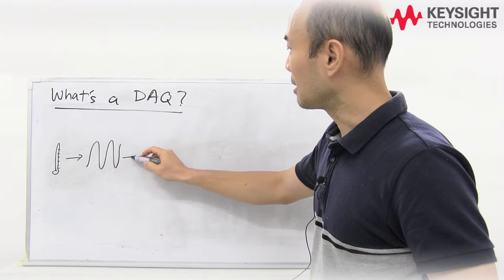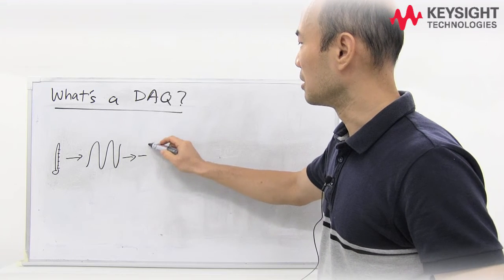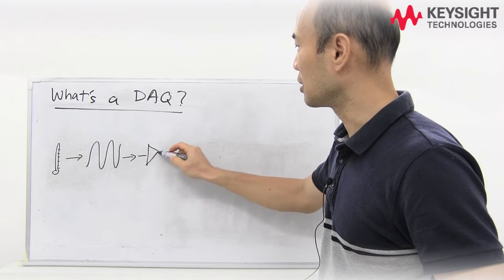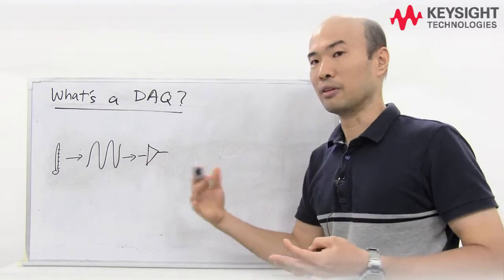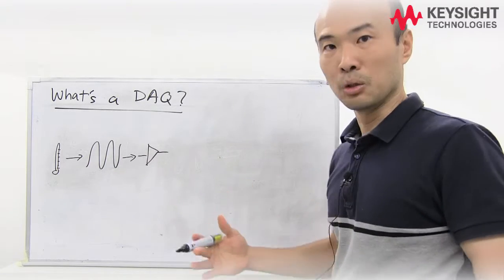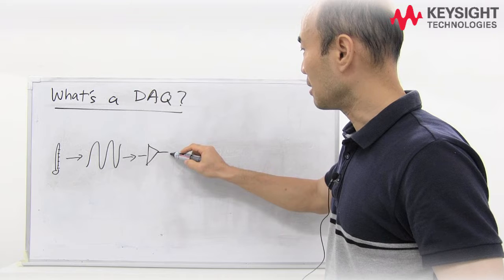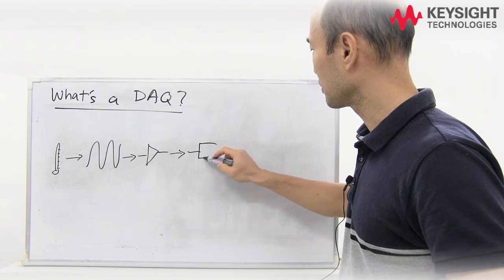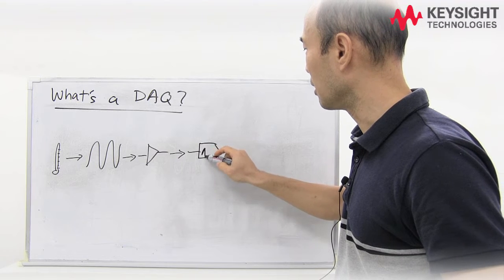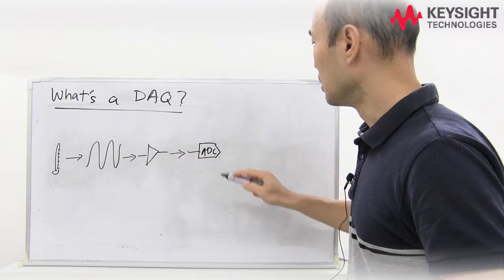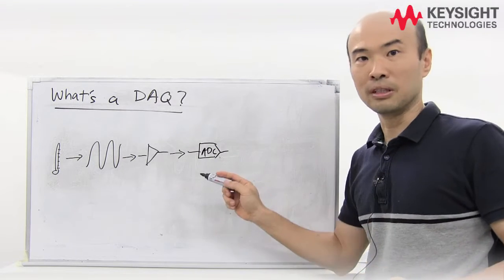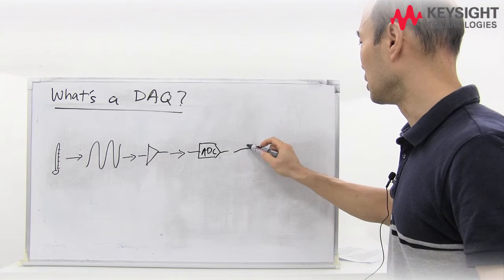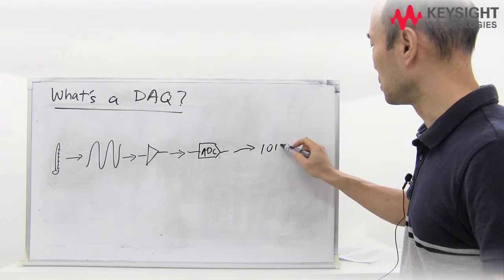So it will be sent over to the signal conditioning circuit where the signal will be adjusted and have noise reduced so that it's easier to work with. And once that's done, the signal will be sent over to your ADC, or we call it analog to digital converter. So the analog to digital converter will convert this into your digital signal, 0010.